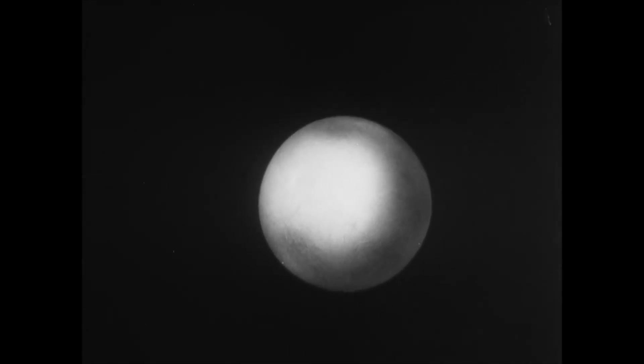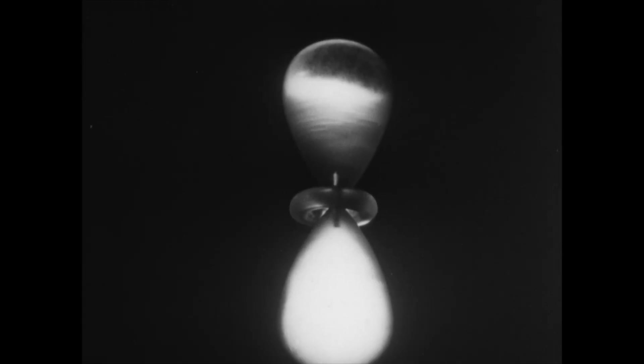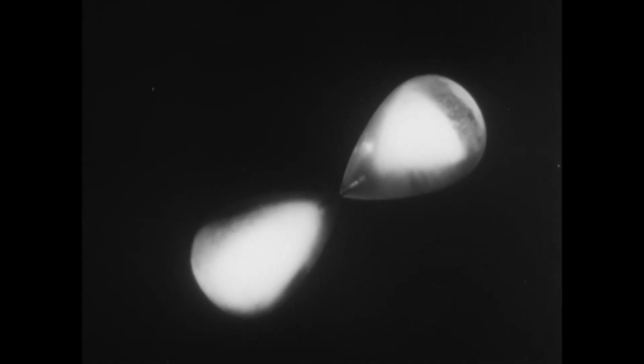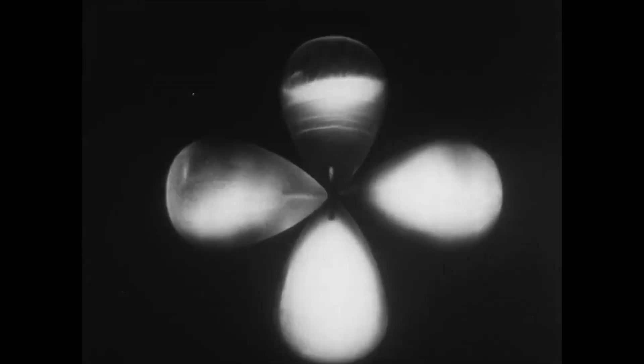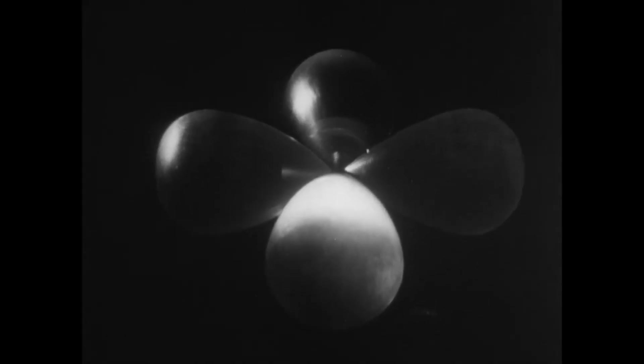The quantum number L determines the magnitude of the electron's angular momentum and characterizes the shape of the orbital. The quantum number M characterizes the position of the orbital in space.